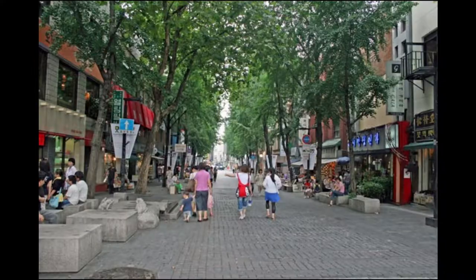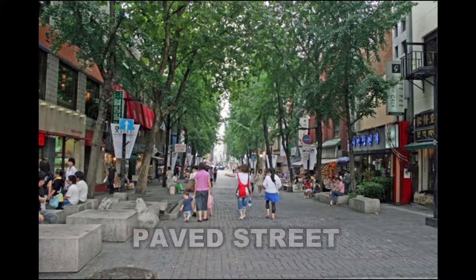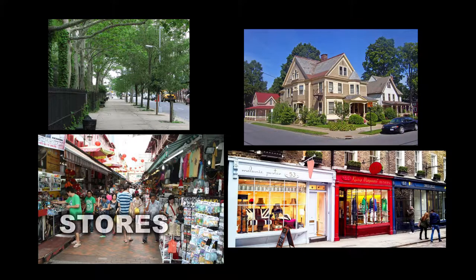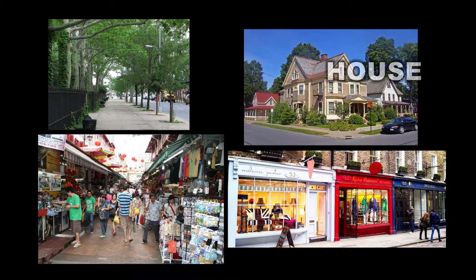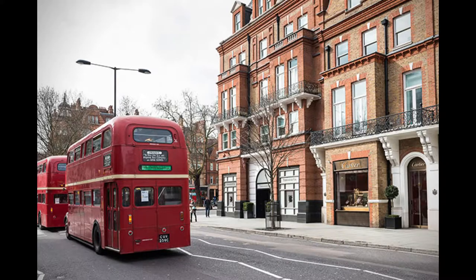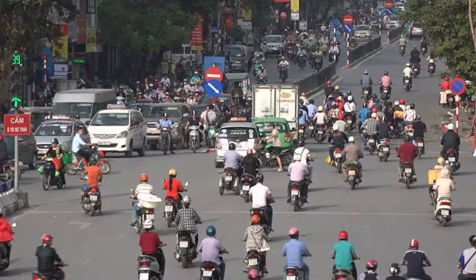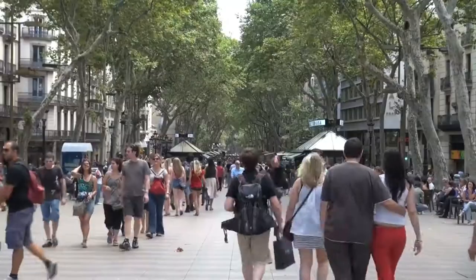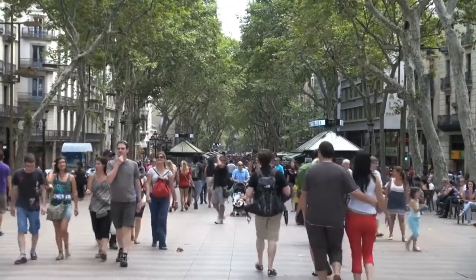A street is a paved public thoroughfare in a built environment which has shops, stores, houses or trees along both sides of it. Street facilitates public interaction. A road may also have buildings on either side, but its main function is as a transportation route only. So a road is just a way of getting from one place to another, but streets exist for the interaction and movement of people.